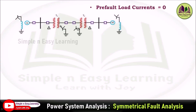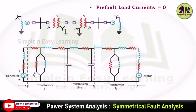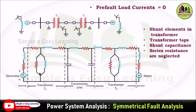Consider the single line diagram. If you draw an impedance diagram, it includes resistance, reactance, and capacitance. For generators there is resistance and reactance; for transformers there is a shunt component. These shunt elements in transformers are neglected, transformer tap settings are neglected, the shunt capacitances in the pi network of transmission lines are neglected, and all series resistances are neglected.